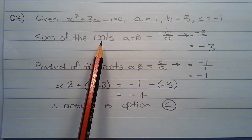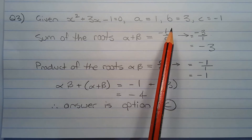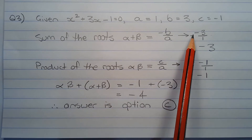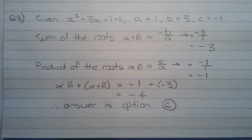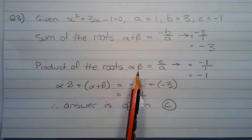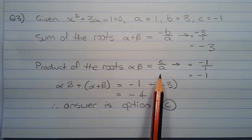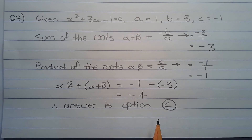The sum of the roots alpha plus beta equals negative b over a, which equals negative 3 over 1, which equals negative 3. The product of the roots alpha beta equals c over a, which equals negative 1 over 1, which equals negative 1.